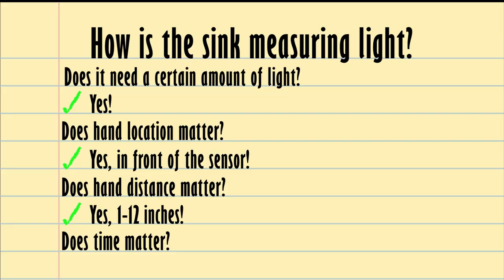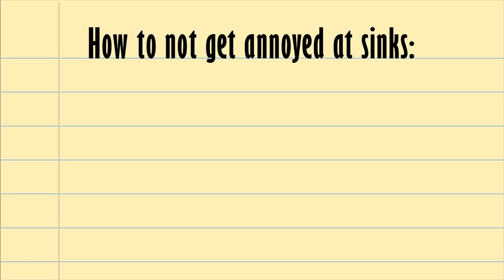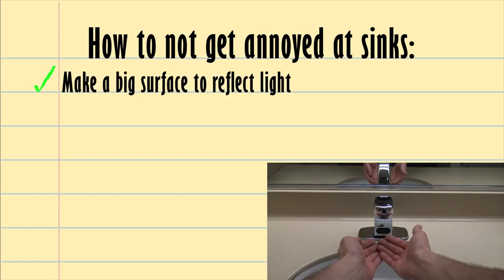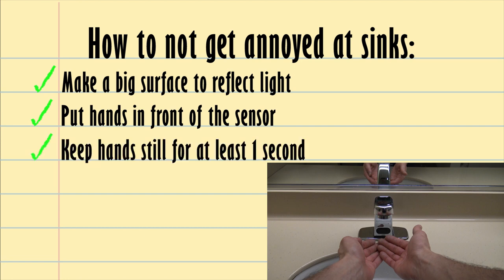So if we take everything that we learned and put it all together, the best way to turn the sink on should be: giving it a nice big surface to reflect the light off of, putting your hand in front of the sensor to get the most near infrared light reflected back, and leaving your hand there for about one second. And when all of this is done together, next time I go to the sink, I don't really have a reason to get annoyed at it anymore.